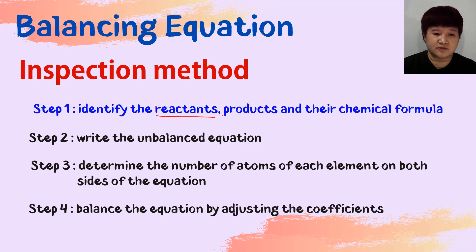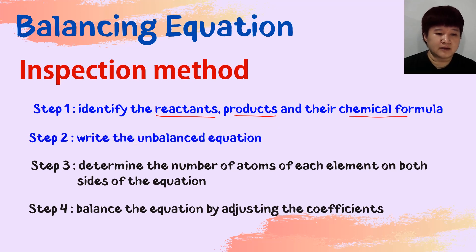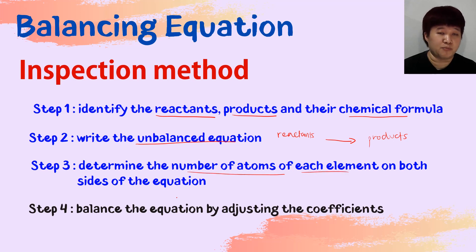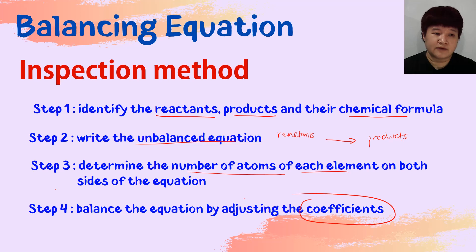What is the inspection method? We have four steps. Step one: identify the reactants and products and their chemical formulas. Step two: write the unbalanced chemical equation, knowing who your reactants and products are. Step three: determine the number of atoms of each element on both sides of the equation. Step four: balance the equation by adjusting the coefficients only. For today's video we will focus on steps three and four.